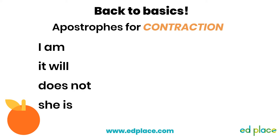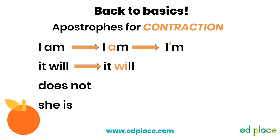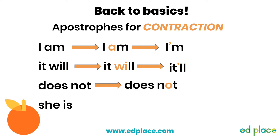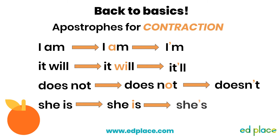Well done. The main rule is to remember that the apostrophe replaces the missing letter or letters. So for 'I am', we lose the A to create 'I'm', and the apostrophe goes where the A was. This is the same if there is more than one letter taken away — so 'it will' becomes 'it'll' and the apostrophe replaces the WI. For 'does not', the apostrophe replaces the second O to make 'doesn't'. And for 'she is', it replaces the I to become 'she's'.